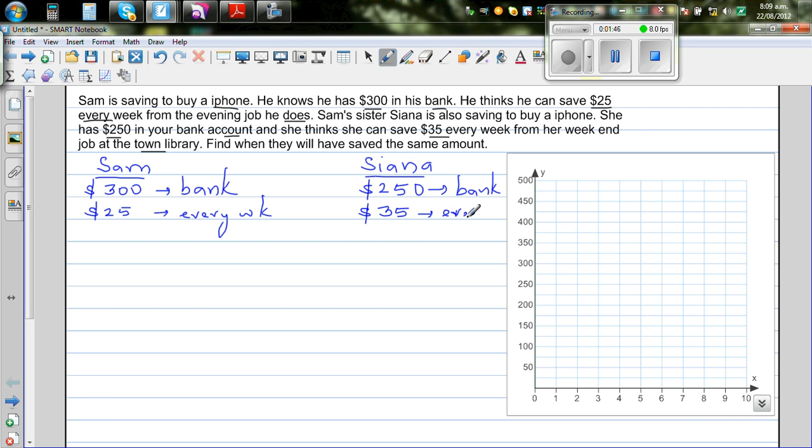We're going to do this in three possible ways. So first let us make up a table. One way is doing this with the help of a table. So I'm going to write week number, Sam, and Sienna.